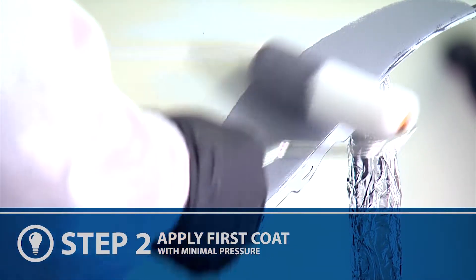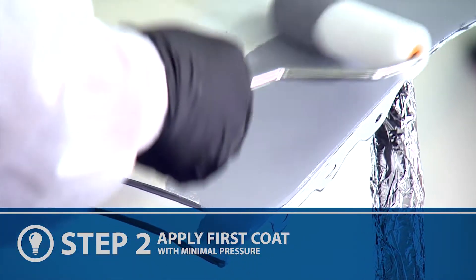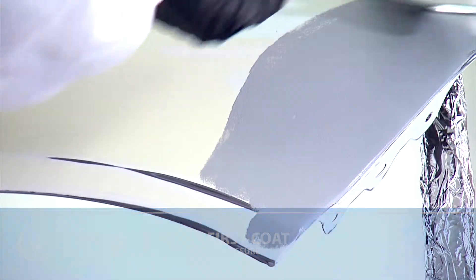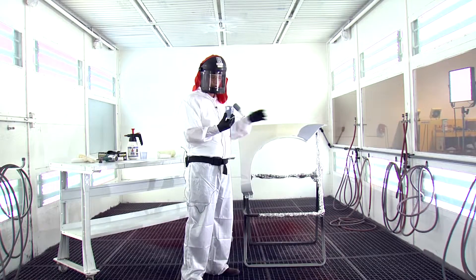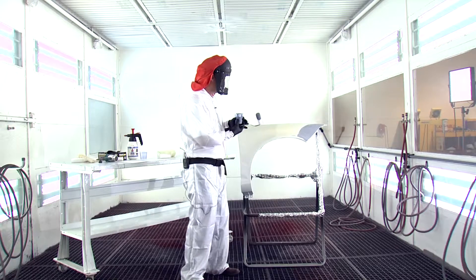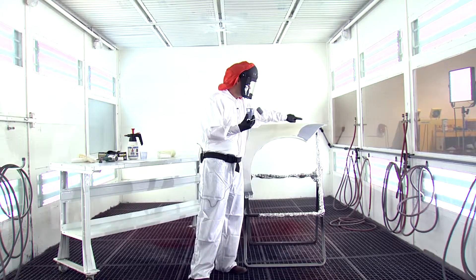You're just guiding the roller along with minimal pressure. Allow this to flash off a little bit, then come back and apply your next coat approximately an inch or more beyond the previous coat.